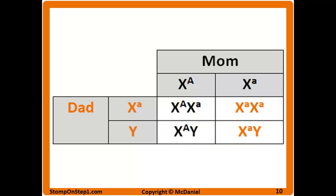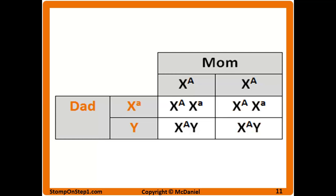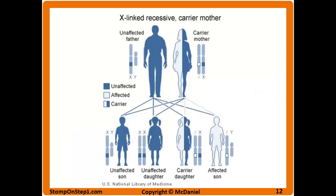Now consider a carrier heterozygous mother and a dad who has the disease — he has a Y chromosome and one affected X. In this case, 50% of daughters are going to be affected (homozygous for the affected allele) and the other 50% are carriers. For sons, 50% will be normal and 50% will have the disease. Finally, consider a mom with two normal genes and a dad who has the disease — none of the children will end up with the disease, but 100% of daughters will be carriers. Here's another visual representation of X-linked recessive which you can pause to review.